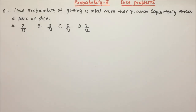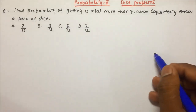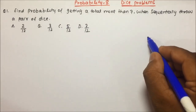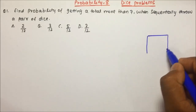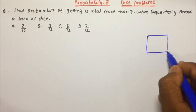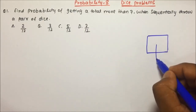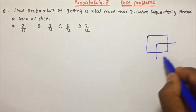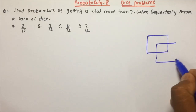So let us start. Before question number 1, I will explain what is a dice and what will be the total outcomes, and how we are going to identify the favourable event. If you have seen a dice, it will be somewhat like this — you can call it a cube in SSC.